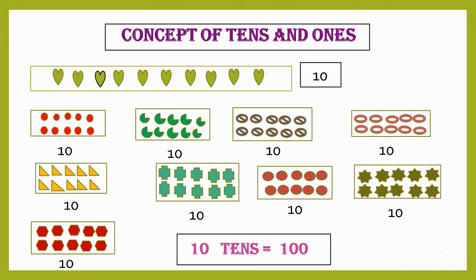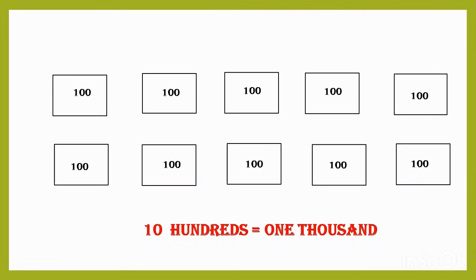Now you can see 100 things. That is 10 bundled. That is 10 tens is equal to 100. The same way you can see on the screen: 100, 100. So how many hundreds are there? 1, 2, 3, 4, 5, 6, 7, 8, 9 and 10. So 10 hundreds is equal to 1000.